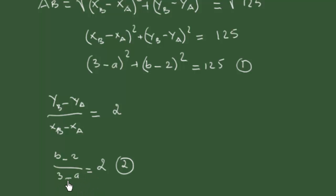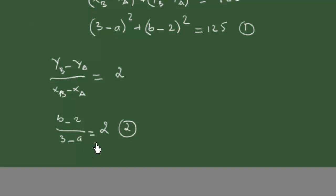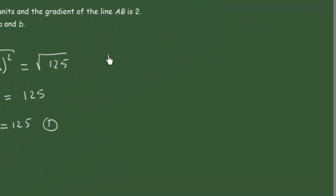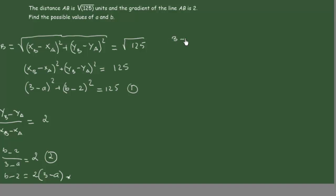We can also cross-multiply to write B minus 2 equals 2 times (3 minus A). We can then take this expression and substitute it into the first equation, replacing (B minus 2). This gives us (3 minus A) squared plus (2 times (3 minus A)) squared equals 125.